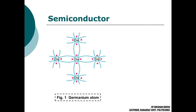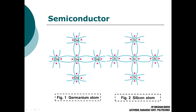You can see here the structure of a germanium atom — this is the nucleus, and these are covalent bonds between two germanium atoms, along with valence electrons at the outermost orbit. With four electrons in the outermost orbit, germanium shares electrons with nearby atoms and forms a crystal-like structure. Silicon has the same structure, also having four valence electrons. These two are the most commonly used semiconductor materials in electronics.